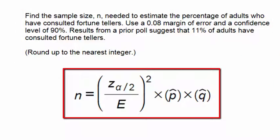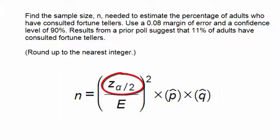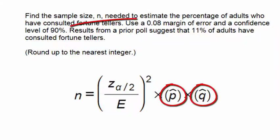Here you see the formula that we will use to find n, the necessary sample size. In the formula we have z subscript alpha divided by 2, which is the critical value, E the margin of error, and p hat and q hat are gotten from the results from the prior study.